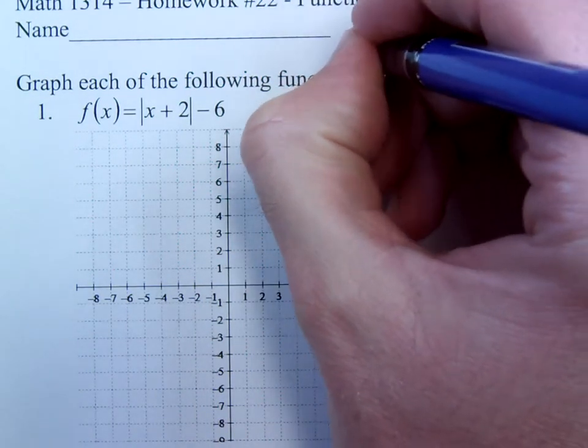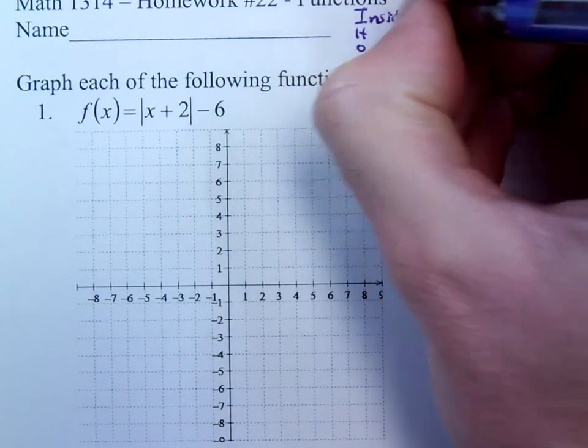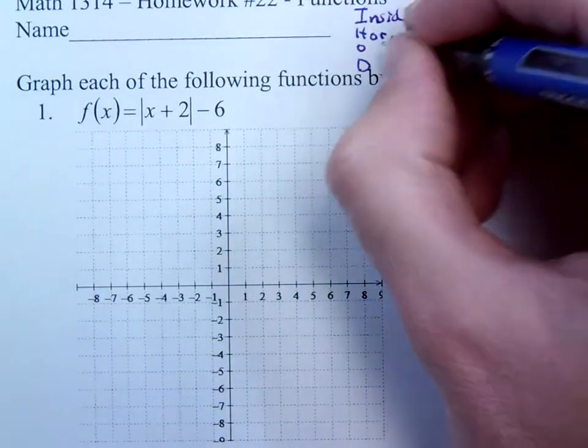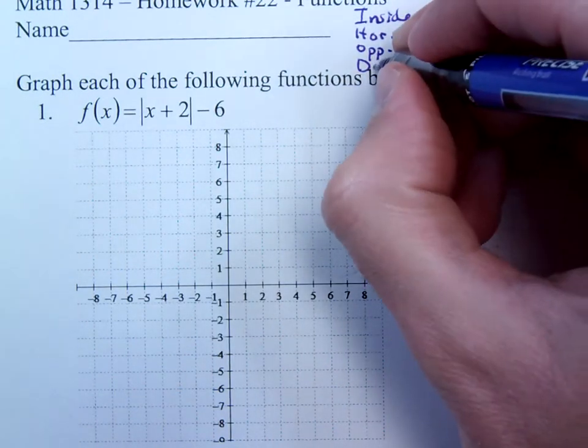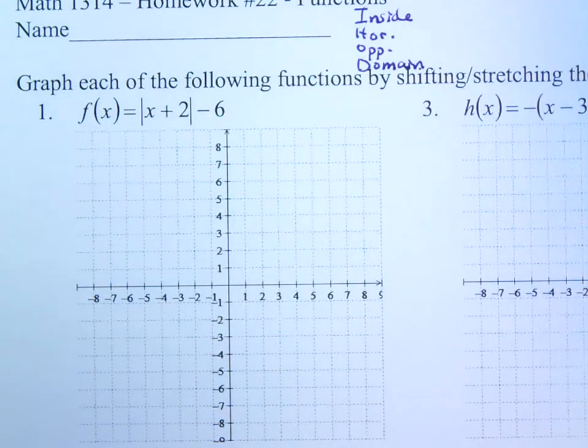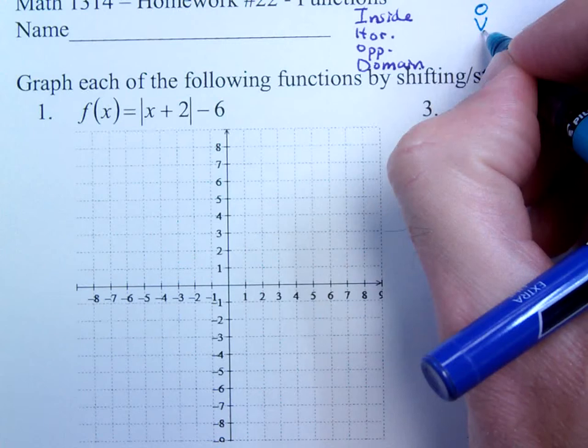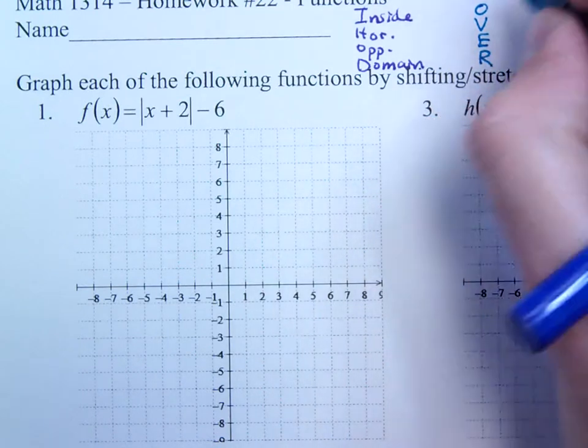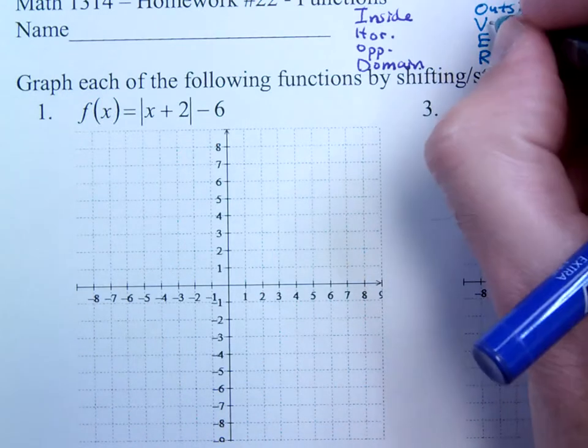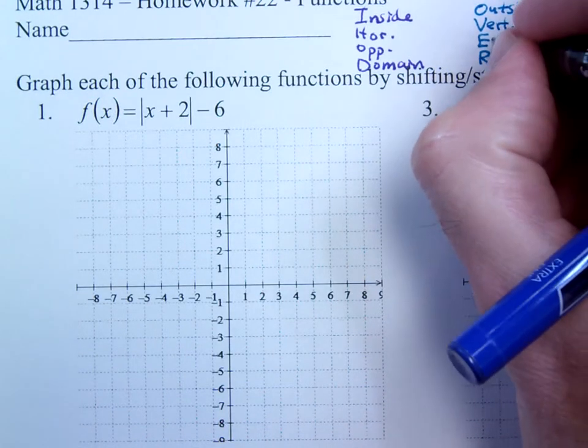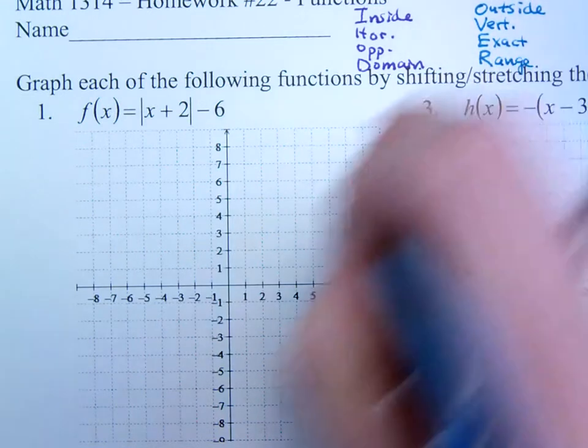When you have IHOD, that means things you see on the inside will affect you horizontally. You do the opposite of what you see and it affects the domain. As opposed to over, things that you see outside the function will affect you vertically. You do exactly what you see and it affects the range.